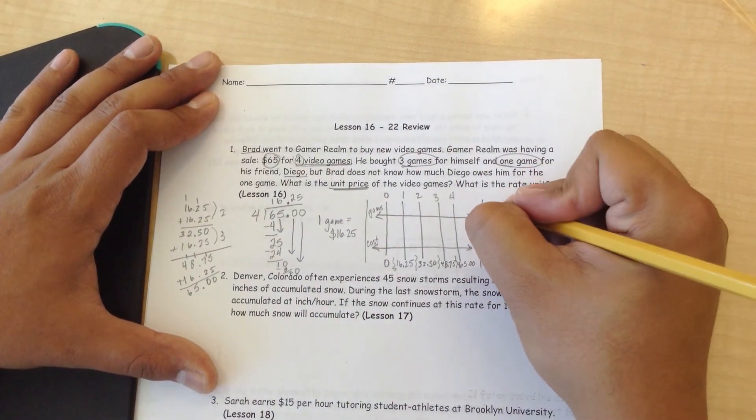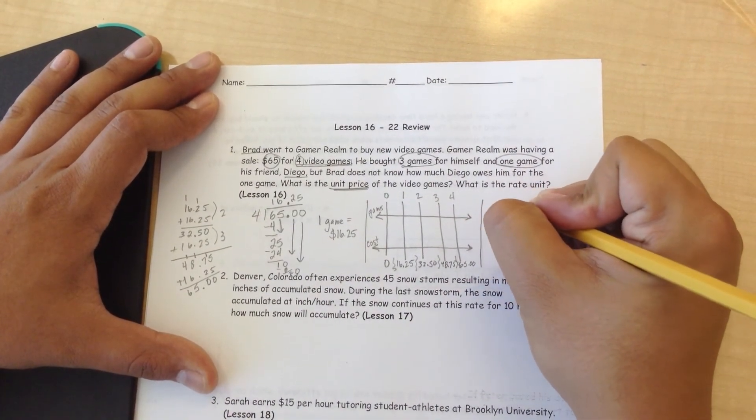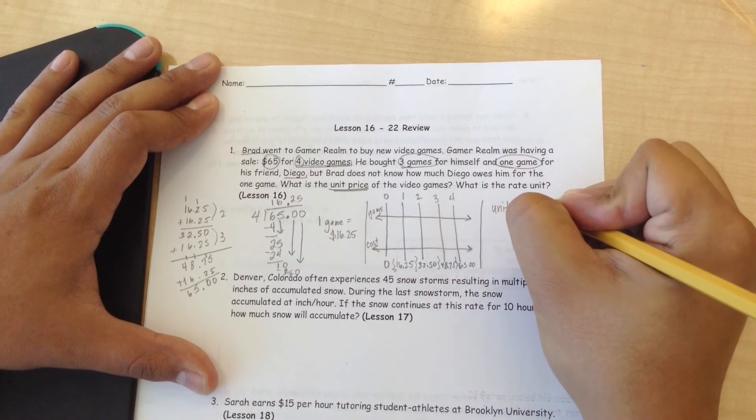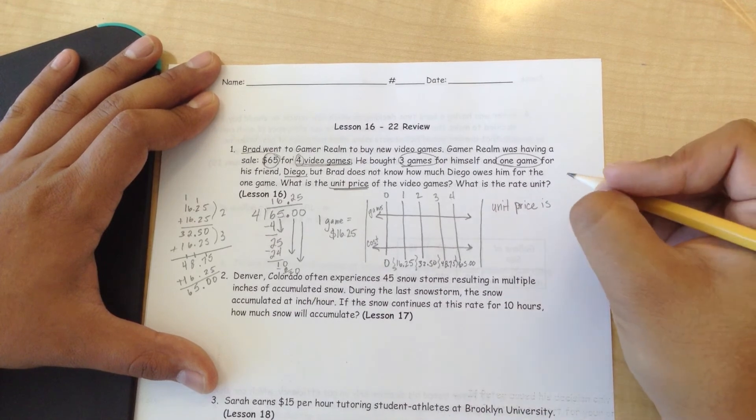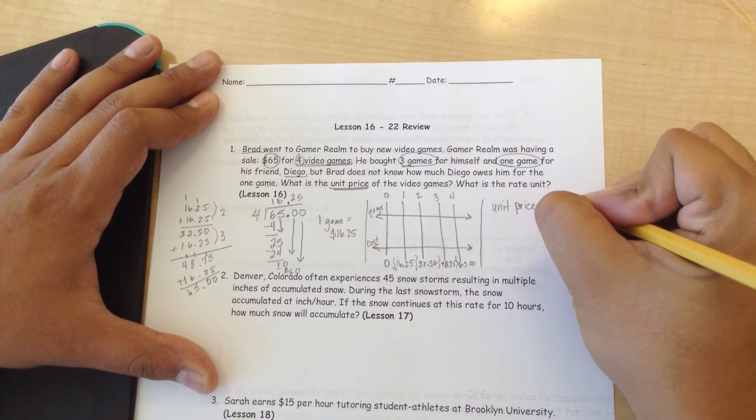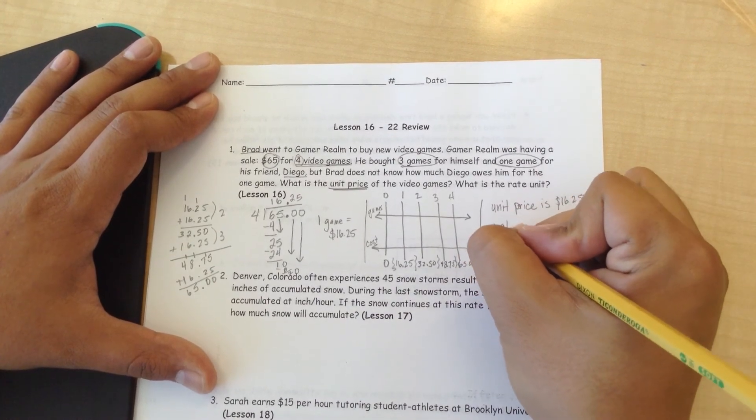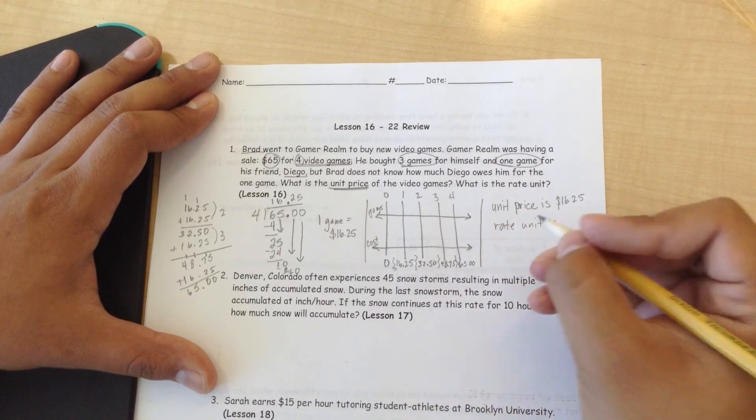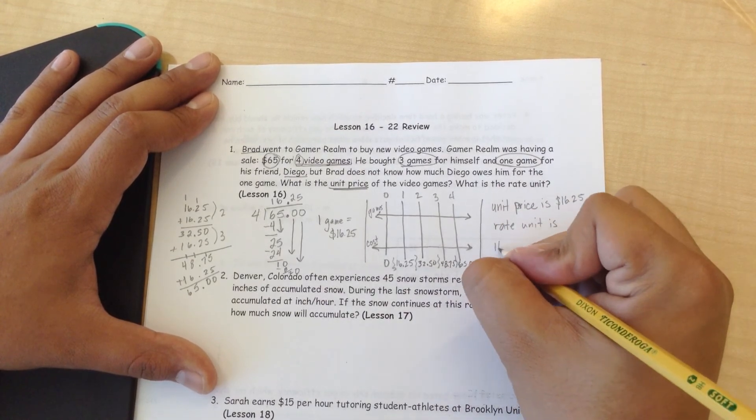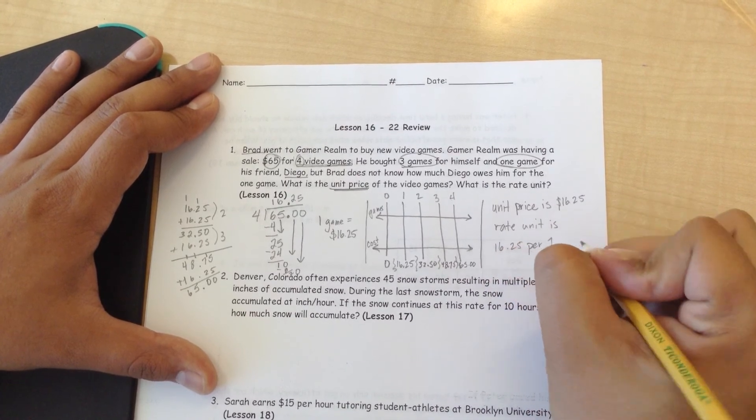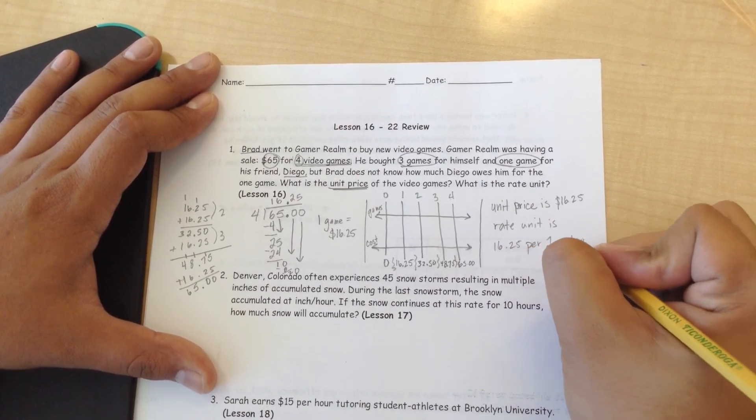So the unit rate or the unit price is $16.25. The rate unit is $16.25 per one video game.